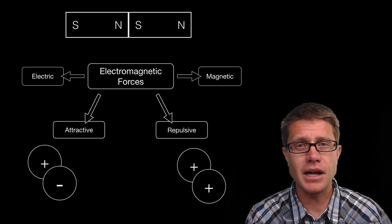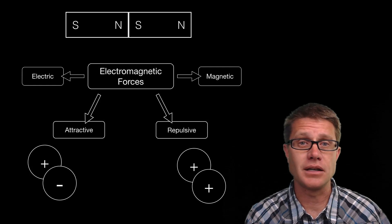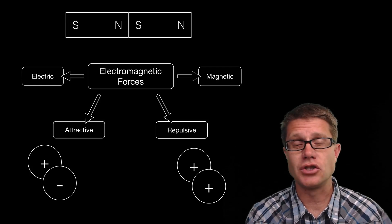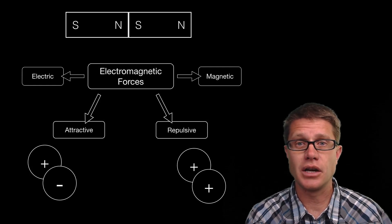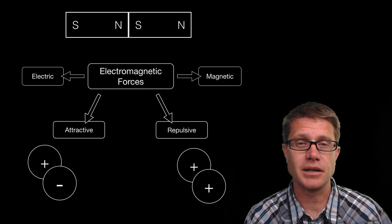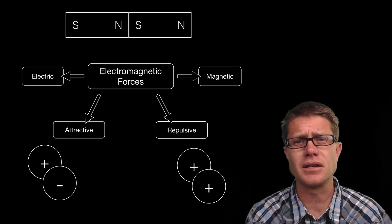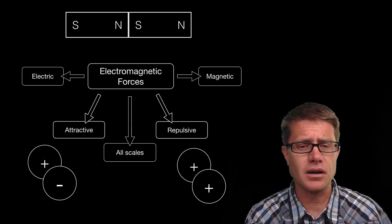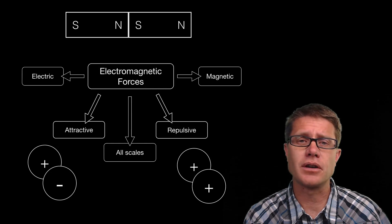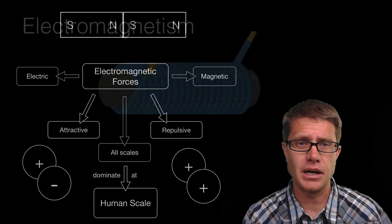There are connections between electric charges and magnets. If we move a magnet we can generate charge, and if we move a charge we can generate a magnetic field. And so they are both essentially the same thing, and they operate along all scales. However, they are going to dominate at the human scale.